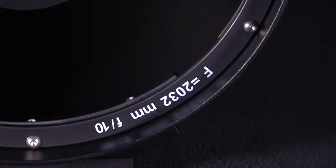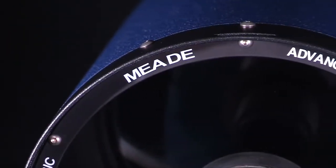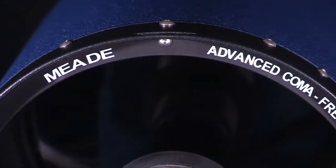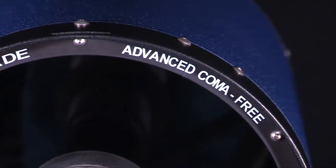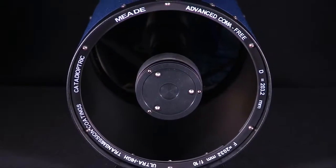Meade's Aplanatic F8 and F10 optical tubes are the ideal solution. Both are equipped with Meade's advanced Coma-Free Optics, a proprietary Coma-Free Optical design that delivers the ultimate in clarity, contrast, and flatter fields of view than traditional Schmidt-Cassegrain designs.